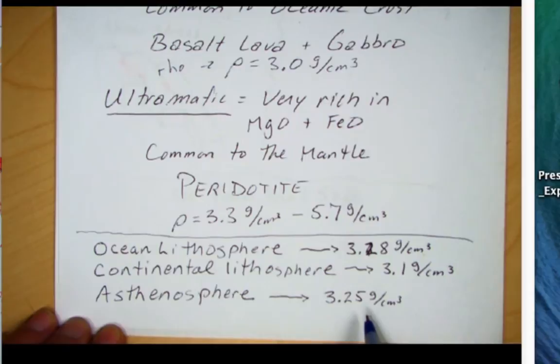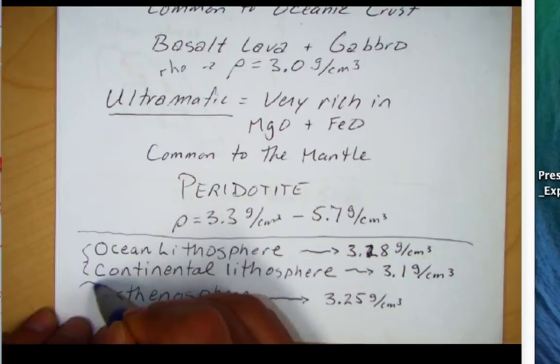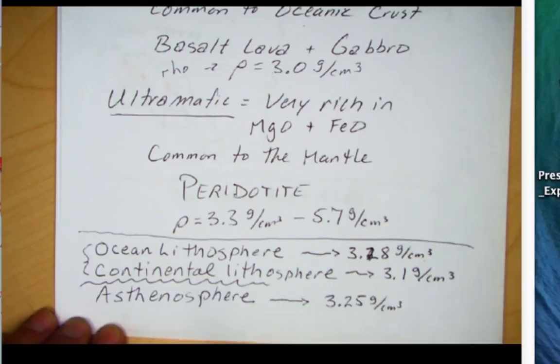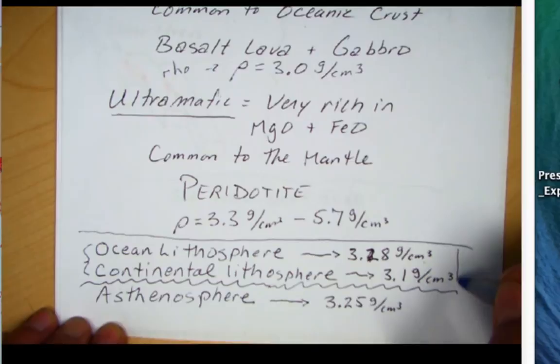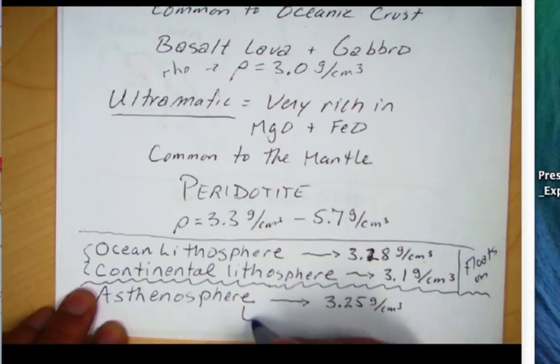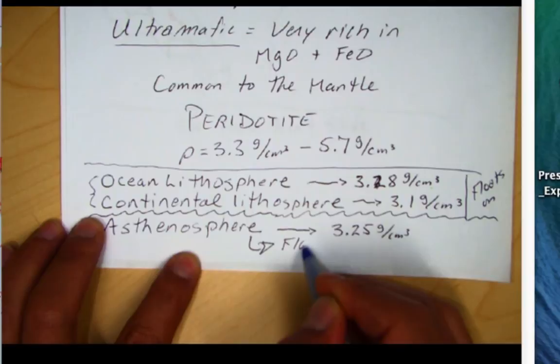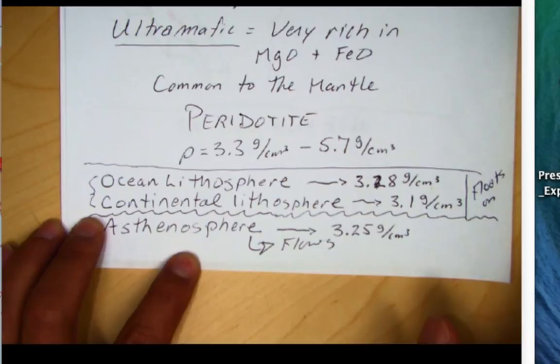The key here is that the lithosphere lies directly over the asthenosphere, and the lithosphere is less dense. That's a fundamental concept: the lithosphere is less dense — in a sense, the lithosphere floats on the asthenosphere. One of the key things about the asthenosphere is that it flows, and this is going to cause plate tectonics to move.